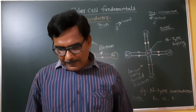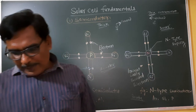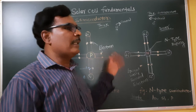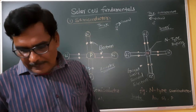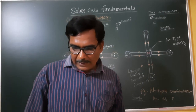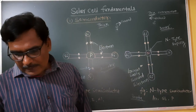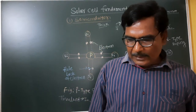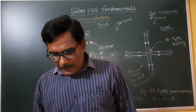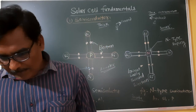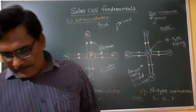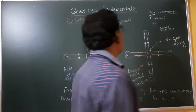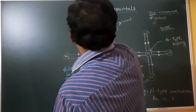At the NP junction, electron-hole pairs are continuously generated during the incidence of sunlight. When sunlight is incident, energy from the solar rays is captured by the solar cell and converted directly into electrical energy in DC form. There is no thermal energy stage — energy conversion is directly from solar energy to electrical energy.